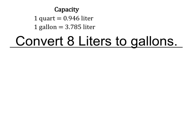So again, we're using dimensional analysis, taking 8 liters to gallons, and I always start with that as a fraction because we're going to be using fraction multiplication, which is part of dimensional analysis. And the other thing we need is the conversion factor, which in this case shows 1 gallon is the same as 3.785 liters.